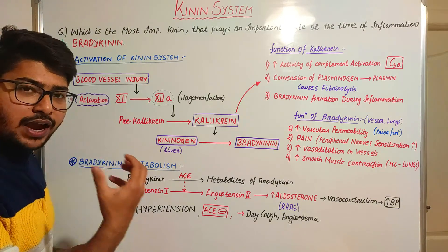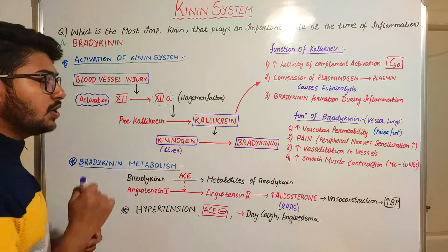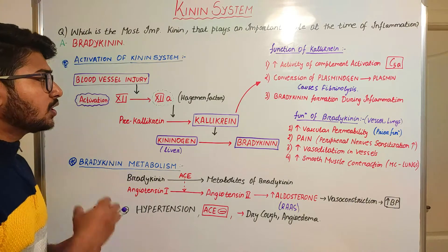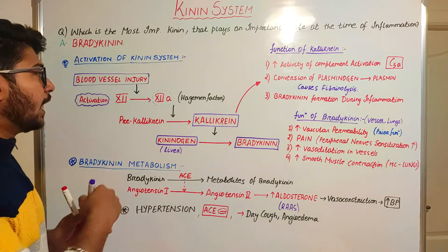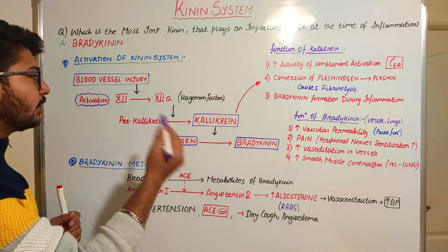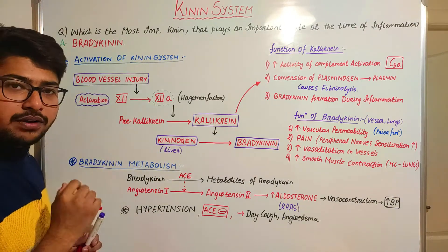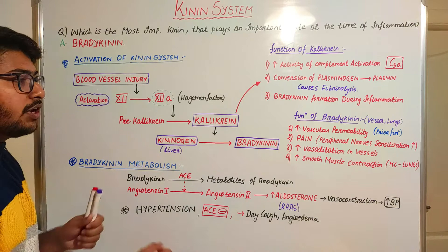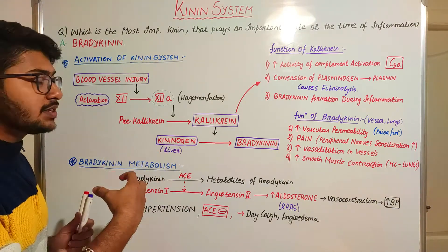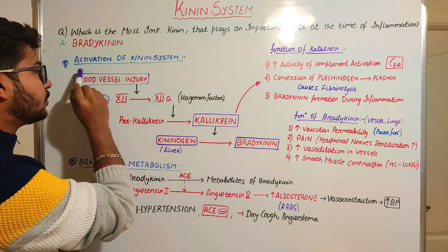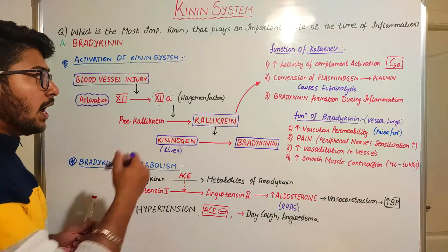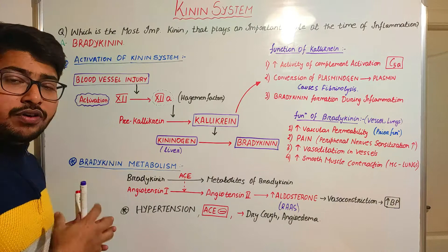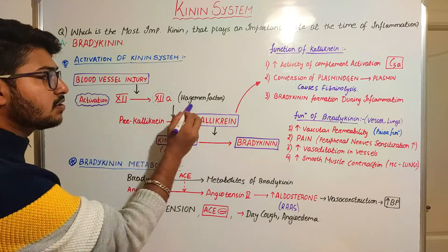Activation of the kinin system occurs when there is injury to the blood vessels. This injury takes place due to the negative charge effect of collagen or endothelial cell injury, which affects the vessel. During inflammation, as many mediators are released, they try to dilate the vessels and affect the endothelial cells, causing injury to the blood vessel. This blood vessel injury will stimulate the next process — the activation of the coagulatory system, that is, the activation of the Hageman factor.